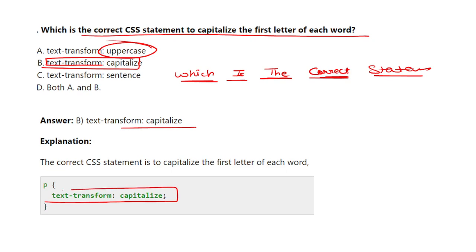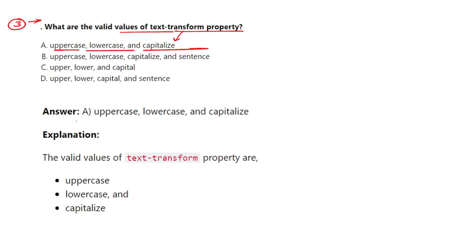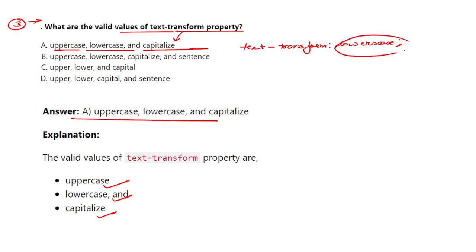The next question is: what are the valid values of the text-transform property? We have discussed three questions on this topic. The valid values of text-transform are: uppercase, lowercase, and capitalize. The correct answer is option number one. You can only use one value at a particular time — you cannot use more than one property together.